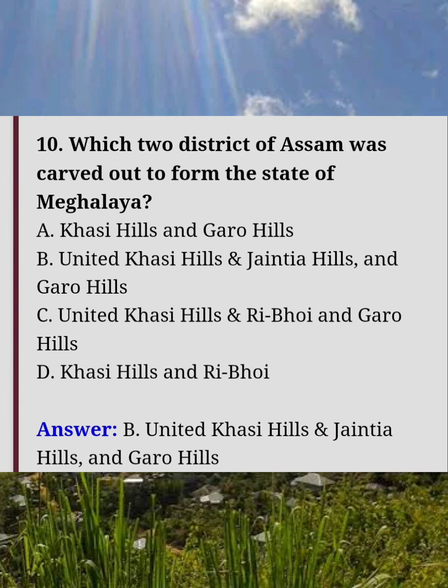Which two districts of Assam were carved out to form the state of Meghalaya? Answer B: United Khasi Hills and Jaintia Hills, and Garo Hills.